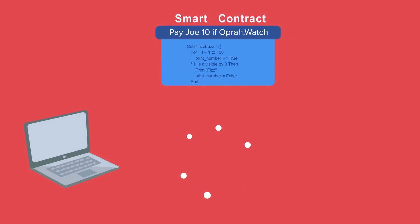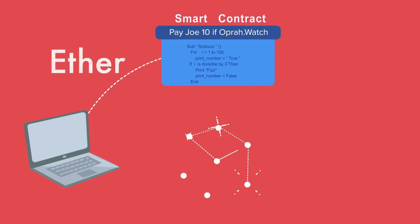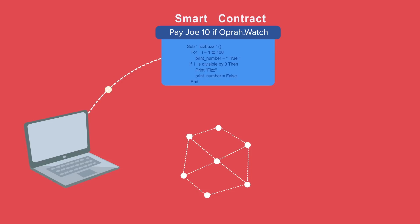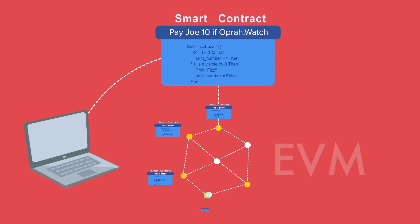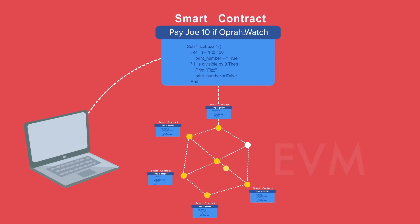For example, a smart contract could say: pay Joe $10 every time he watches Oprah's speech and cries — and it would pay Joe once those conditions are met. Because all the nodes run this code, Ethereum can be considered a worldwide computer that no one can turn off and that no one can tamper with. It runs exactly as programmed.